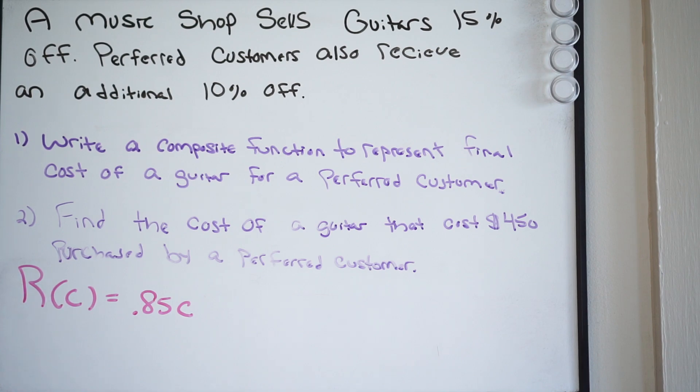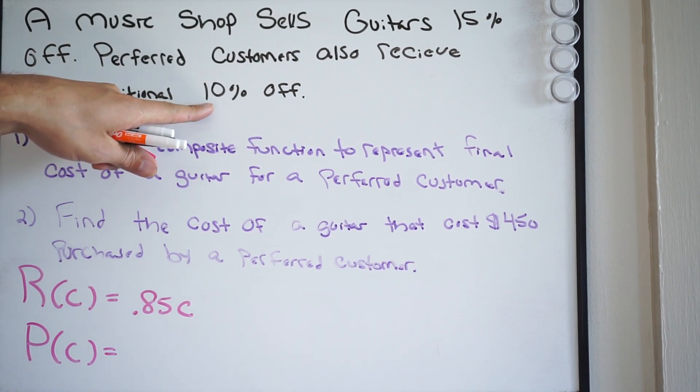But let's assume that you also are a preferred customer. We have to create a function for that. So preferred cost or P of C. That's going to be 10% off.